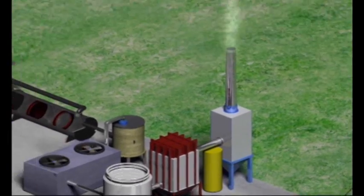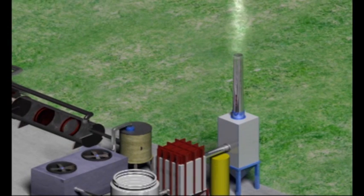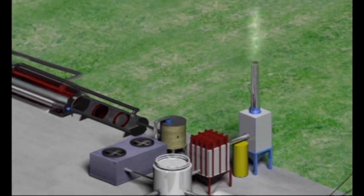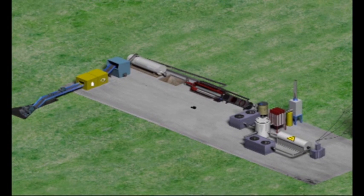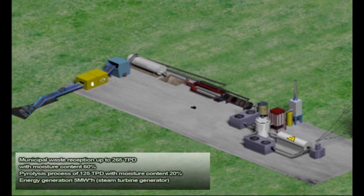The off-gases pass through a pollution control system to be vented safely into the atmosphere. One unit can process up to 125 tons per day with waste moisture content 20% and produce over 5 MWh electric power.